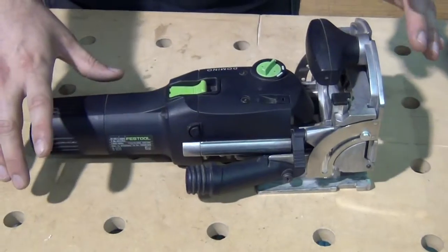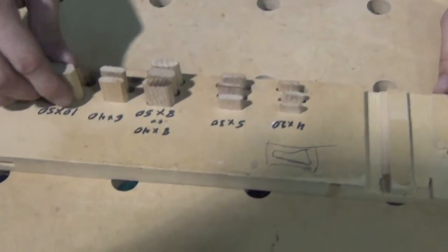Okay, the Domino, first off, it creates what's called a floating tenon and that's what this is.